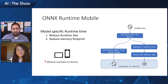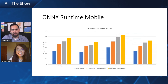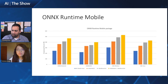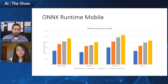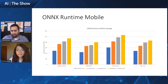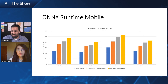The size of the runtime package varies based on the number of models you want to support. The compressed size of the core ONNX Runtime Mobile package can achieve less than 300 KB on both Android and iOS platforms, which makes on-device inference more feasible to meet strict memory and disk constraints.